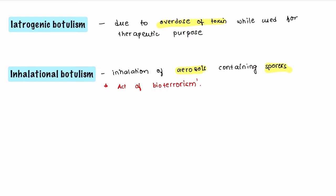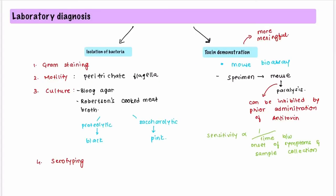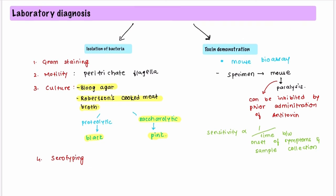Laboratory diagnosis includes two components: isolation of the bacteria and toxin demonstration. For isolation, gram staining reveals non-capsulated bacilli with sub-terminal oval bulging spores. These bacteria are motile with peritrichate flagella. For culture, they can be grown on blood agar and Robertson's cooked meat broth — proteolytic strains turn the meat black, while saccharolytic strains turn it pink. Serotyping is done using type-specific antisera.